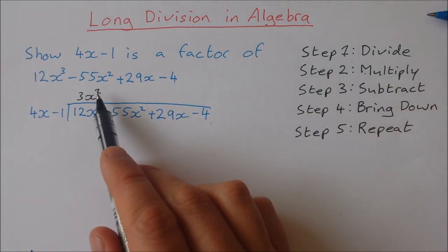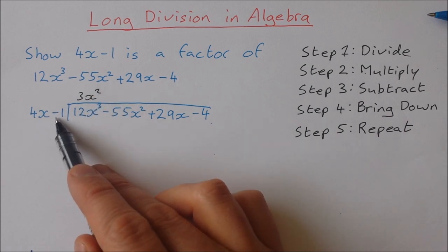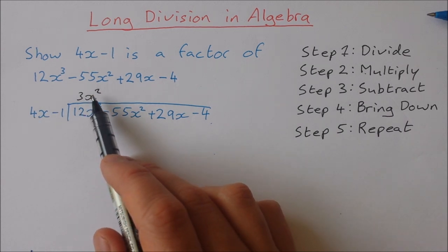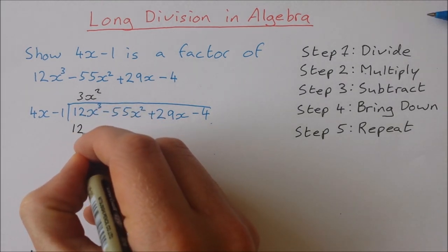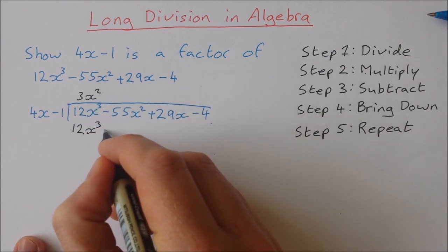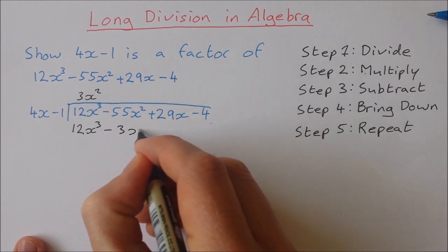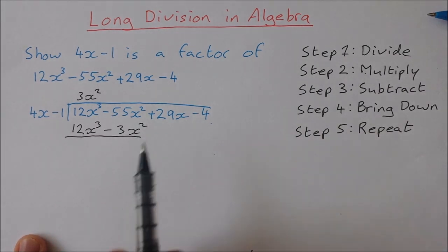Step 2 multiply. So we're going to multiply this 3x squared by 4x minus 1. 3x squared multiplied by 4x is 12x cubed. 3x squared multiplied by minus 1 is minus 3x squared. That's step 2 multiply.